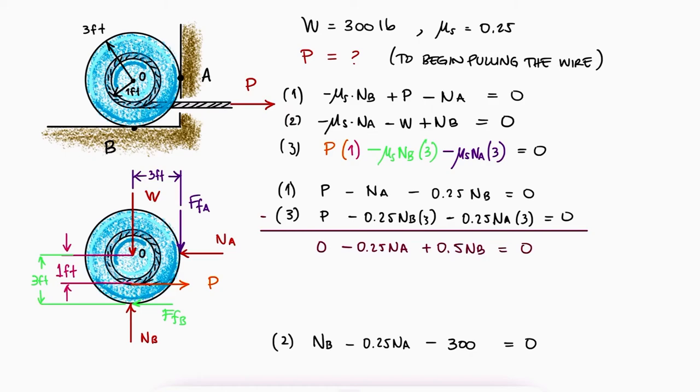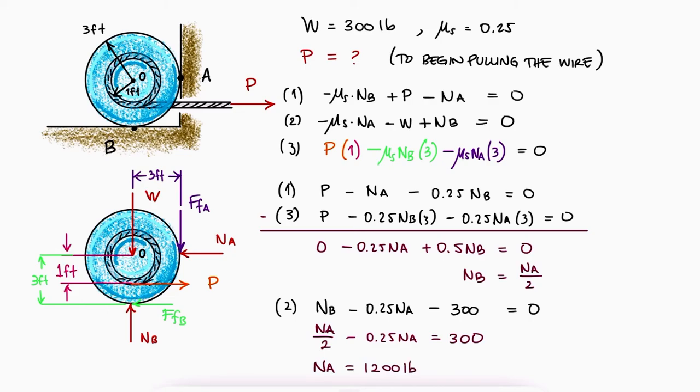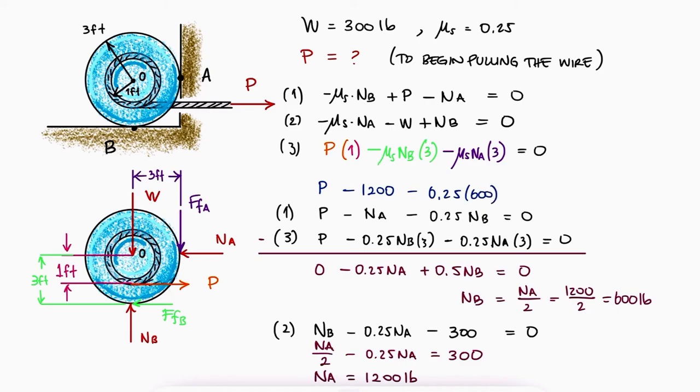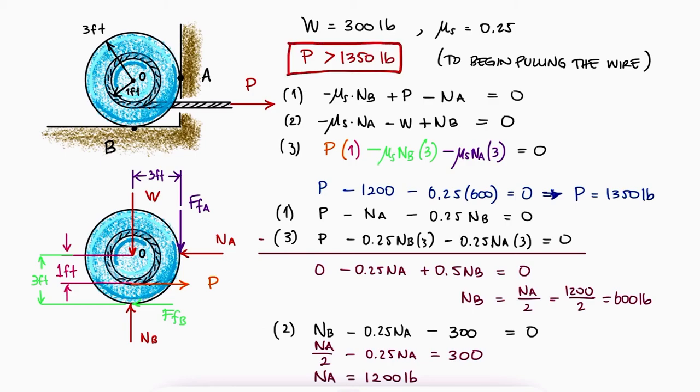Subtracting 3 from 1, we can solve for NB and substitute it in 2. NA would be equal to 1200 pounds, NB 600 pounds, and therefore P 1350 pounds. This means that any force higher than 1350 pounds would overcome the friction forces and the spool would start to rotate.